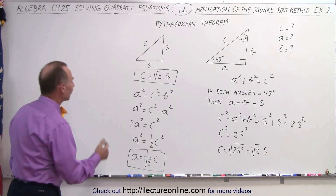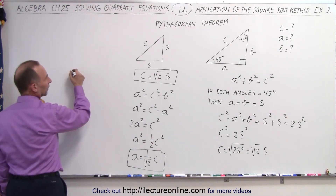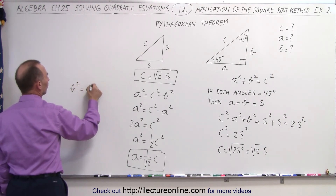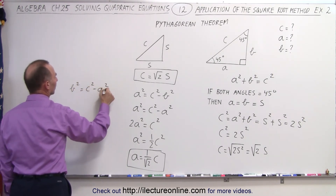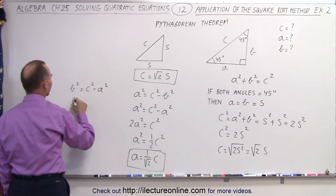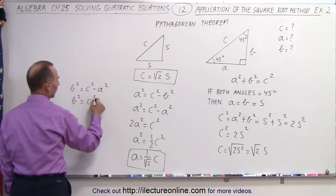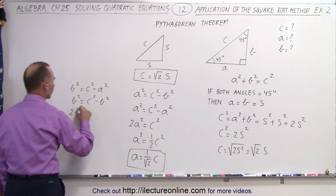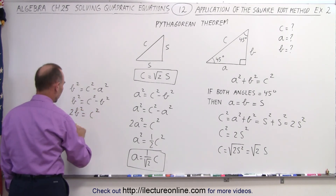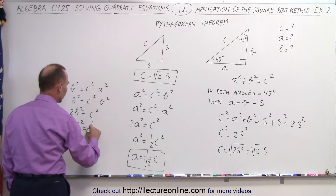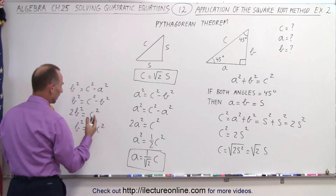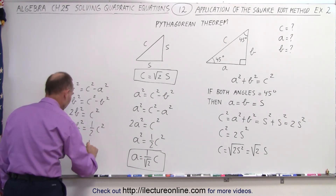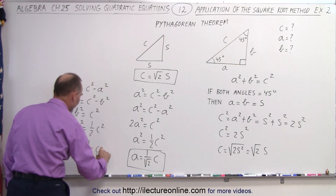We could do the same for B. We could say that B squared is equal to C squared minus A squared. But since A is equal to B, I can write that B squared is equal to C squared minus B squared. Bringing B across, I can say 2B squared is equal to C squared, or B squared is equal to 1 over 2 times C squared. Taking the square root of both sides, B is equal to 1 over the square root of 2 times C.